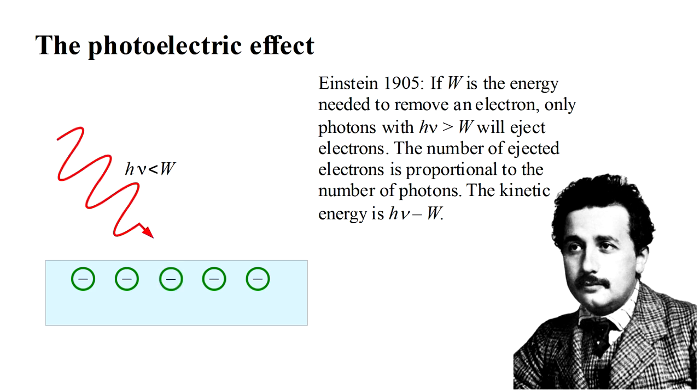On the other hand, a photon of low frequency light does not have enough energy to free an electron. So even if there are many such photons, that is, the light is very bright, no electrons will be ejected from the material. Thus, Einstein explained how Planck's quanta manifest themselves as, quote, real particles of light.